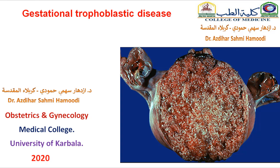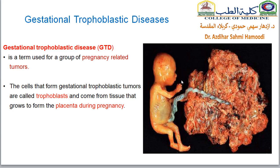Despite the rarity of these illnesses, patients with molar pregnancy requiring additional treatment after an evacuation can expect successful treatment outcomes, with overall cure rate for gestational trophoblastic tumor approaching 100%. Gestational trophoblastic tumors is a term used for a group of pregnancy-related tumors. The cells that form these tumors are called trophoblasts, and they come from tissue that grows to form the placenta during pregnancy.